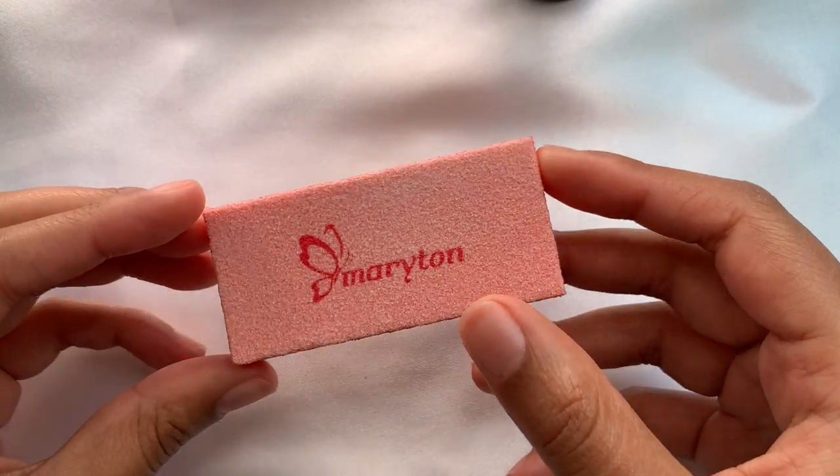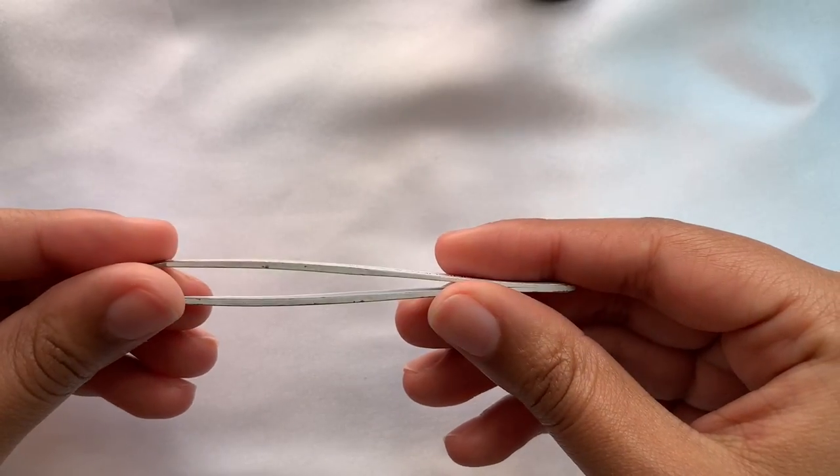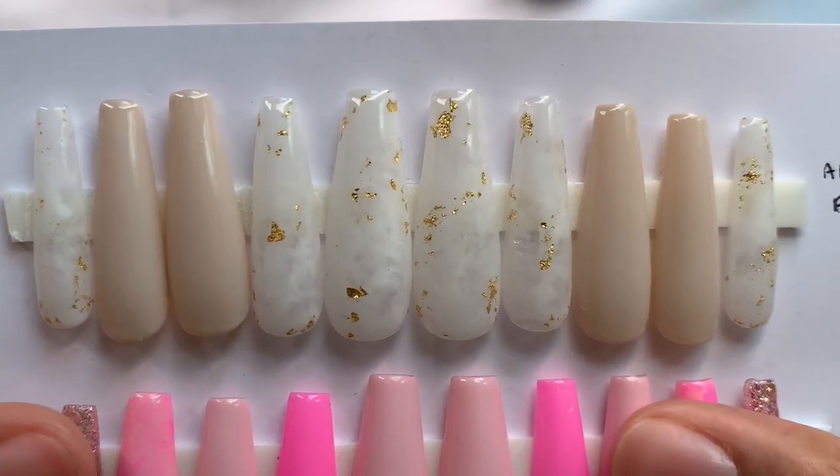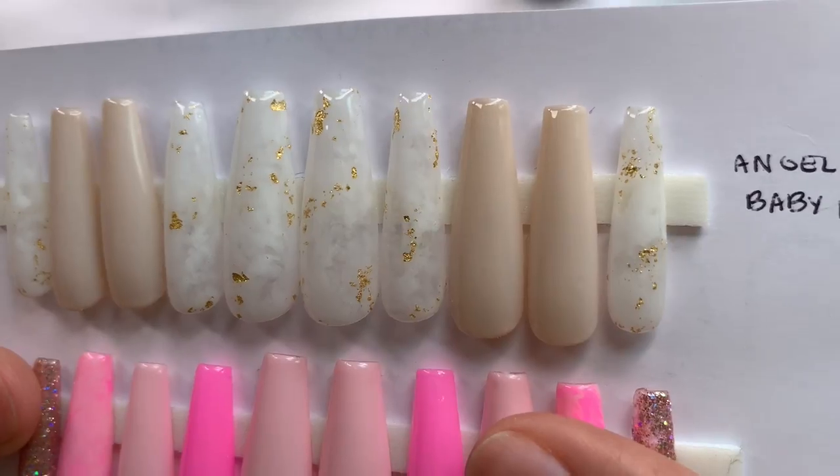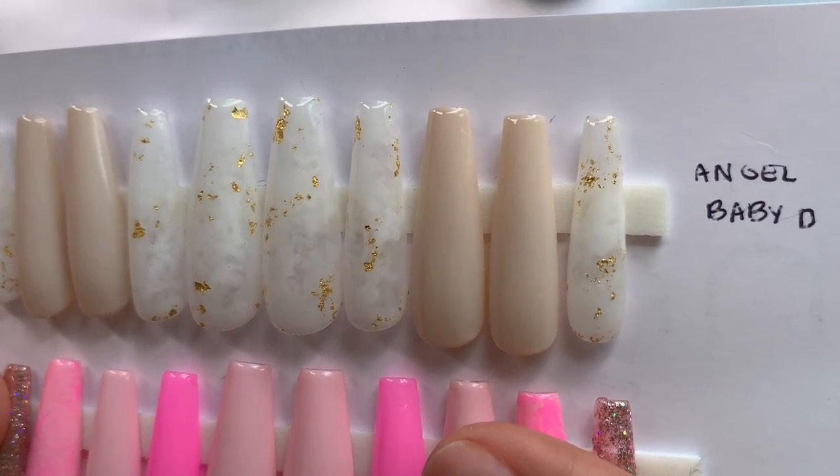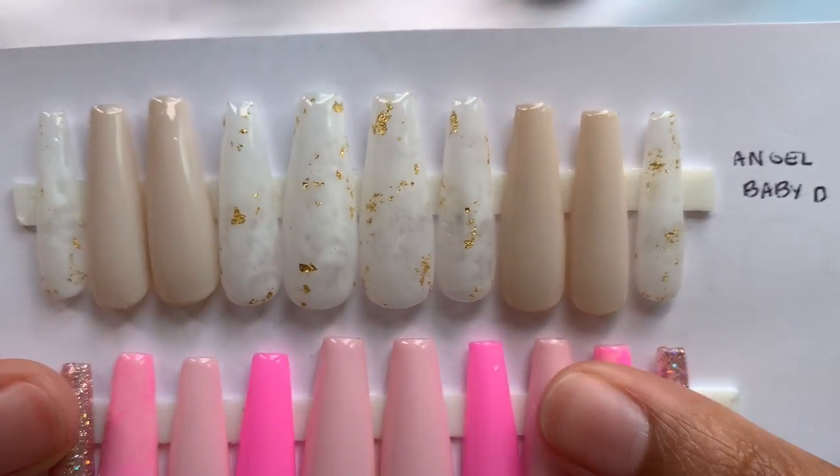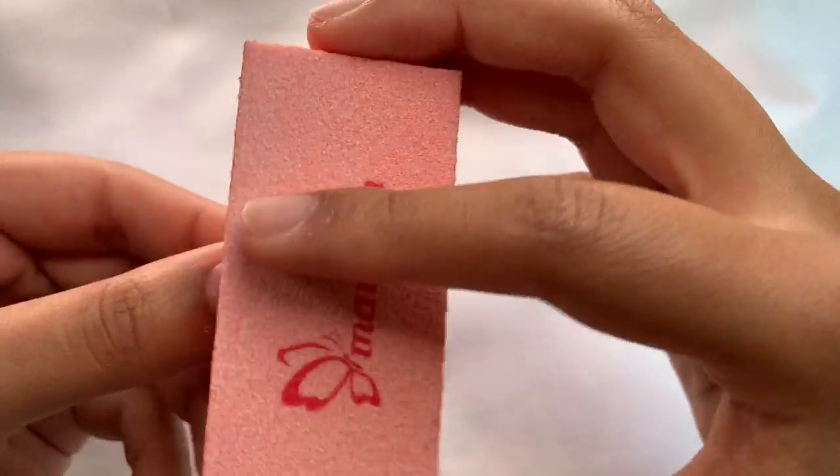Some additional tools that I like to have are a buffer block and some tweezers and you'll see why in a second. The set that I'll be using today is called Angel Baby and it's on my website if you guys click the link wherever I have it listed. It's really cute and I really suggest this one.